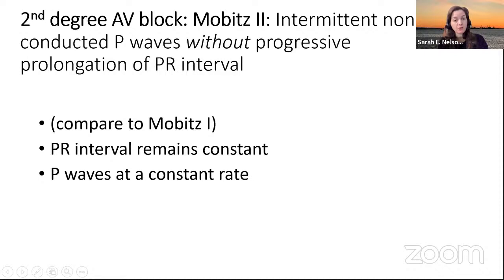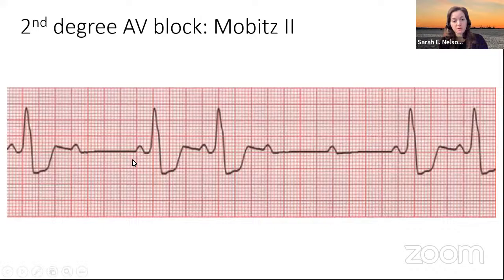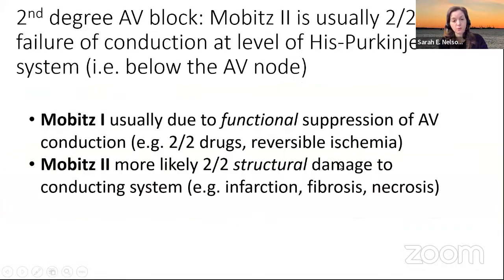Mobitz 2 is where you have P waves that get dropped, but without the progressive prolongation of the PR interval — no warning sign. The P waves march at the same rate and then, without warning, you have a dropped beat. Here there are even two beats in a row where the QRS complex was totally dropped. This is usually more typically due to structural damage — infarction, fibrosis, or necrosis — and failure of conduction at the level of the His-Purkinje system, which is below the AV node.